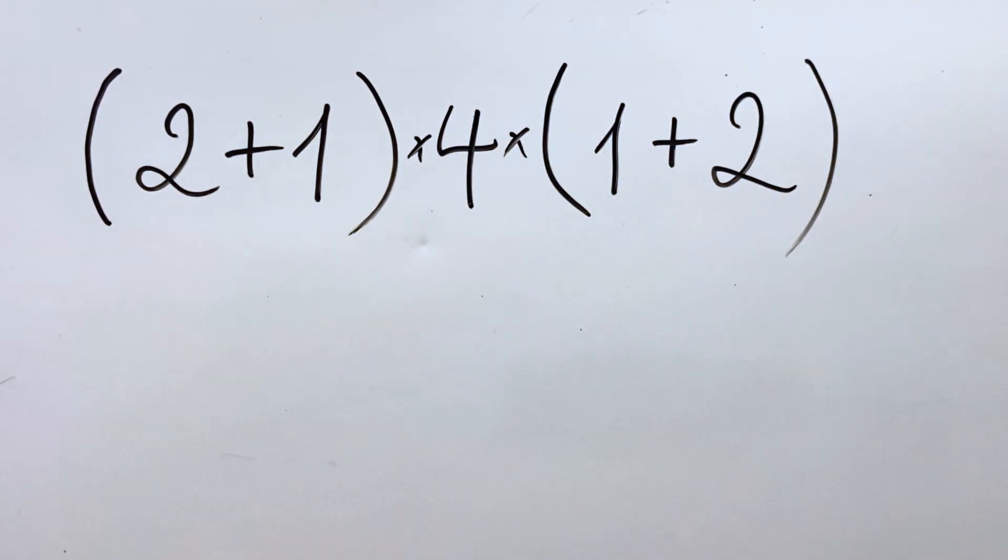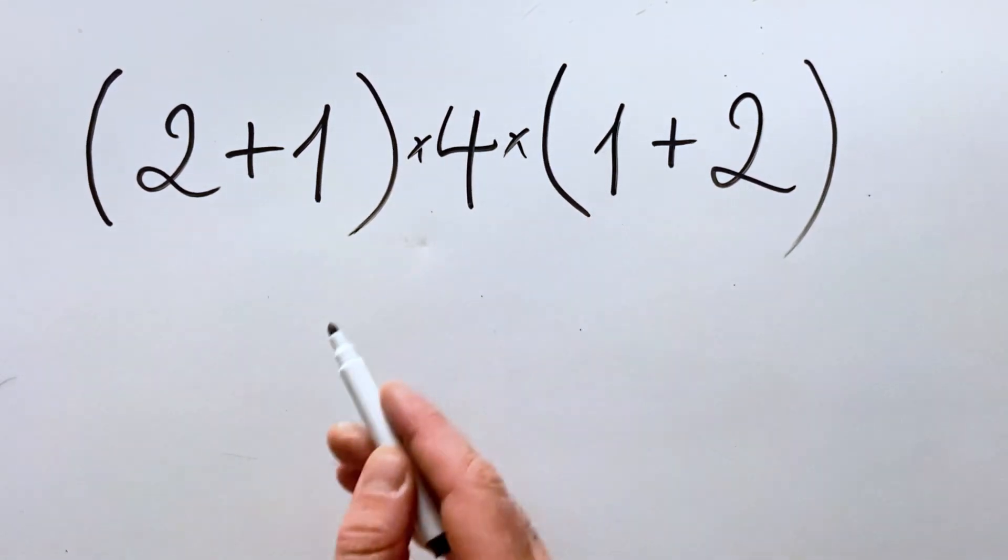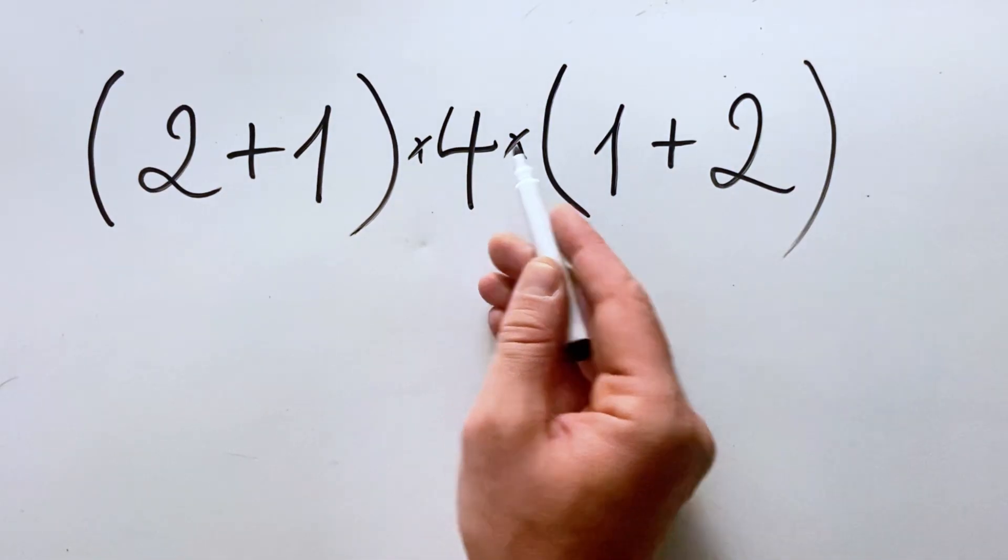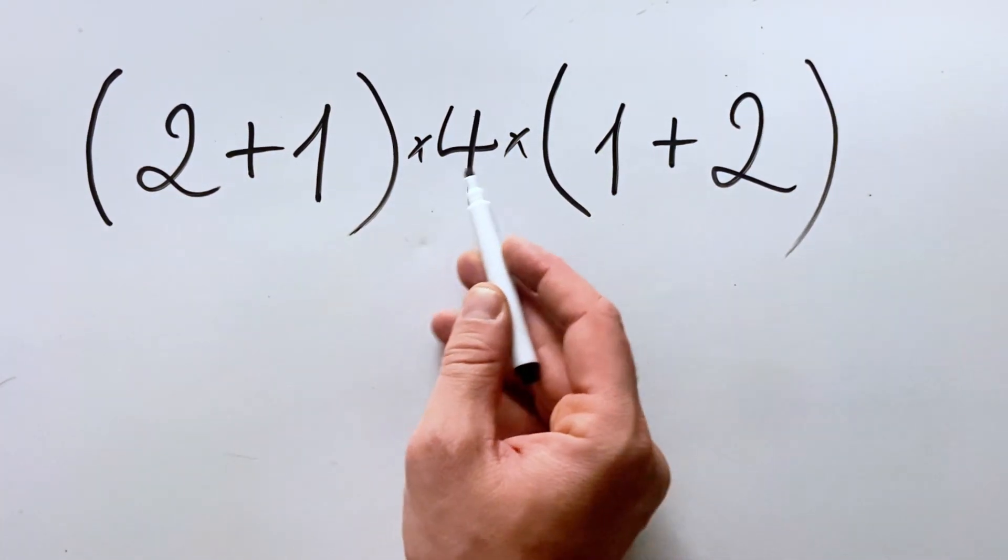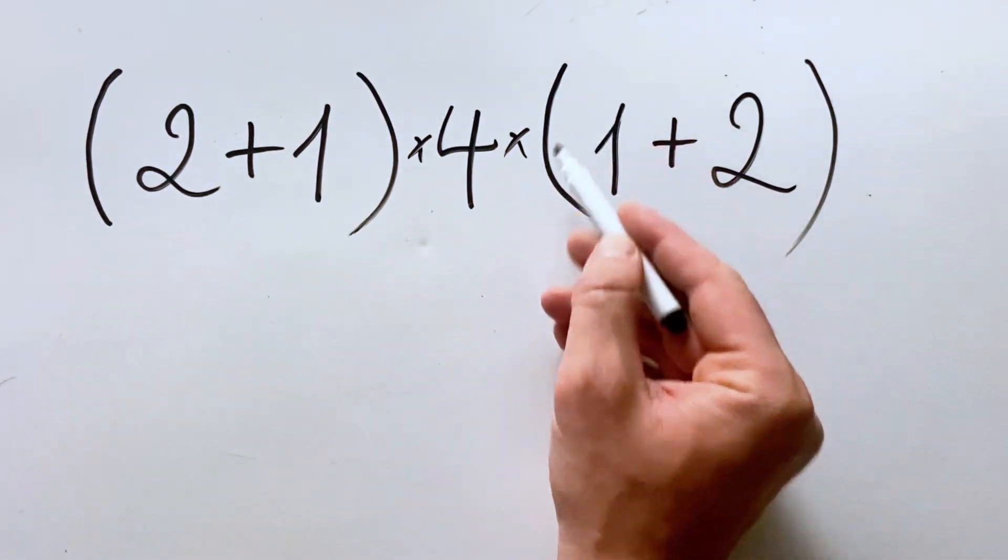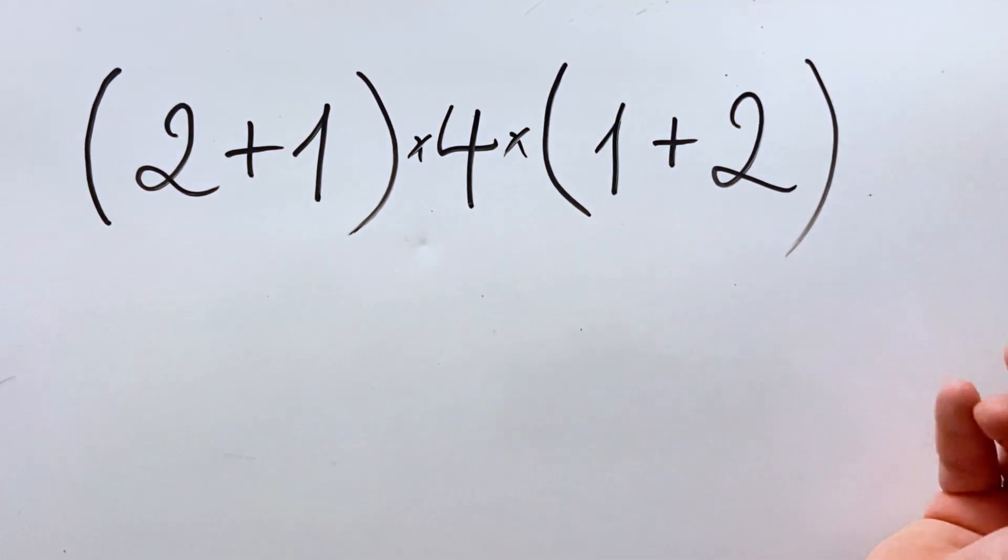So here it's the same. This means multiplication, which means that we have (2+1) multiply by 4 multiply by (1+2).